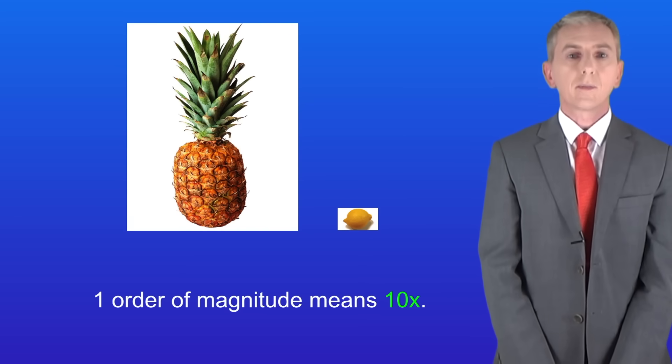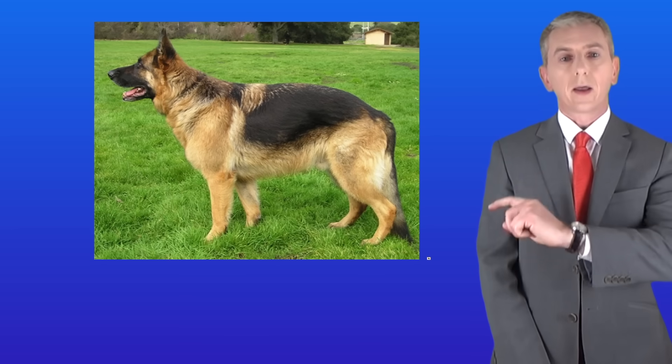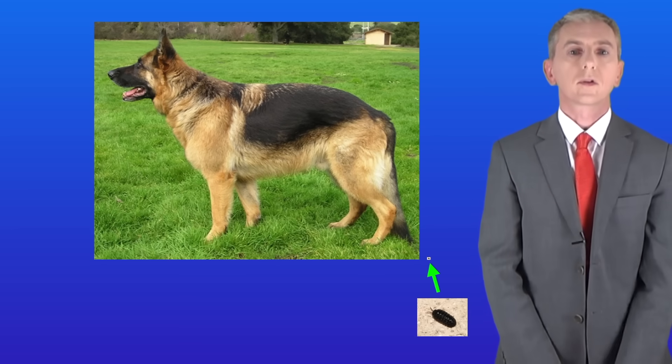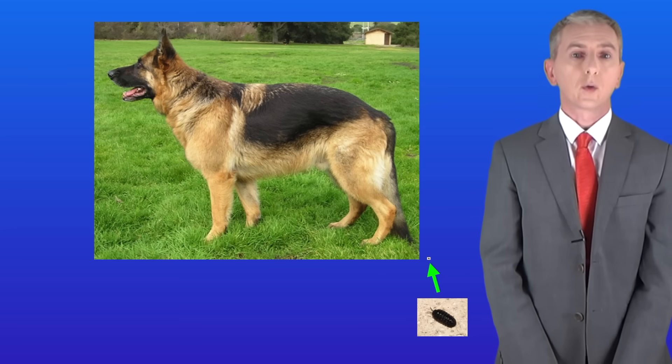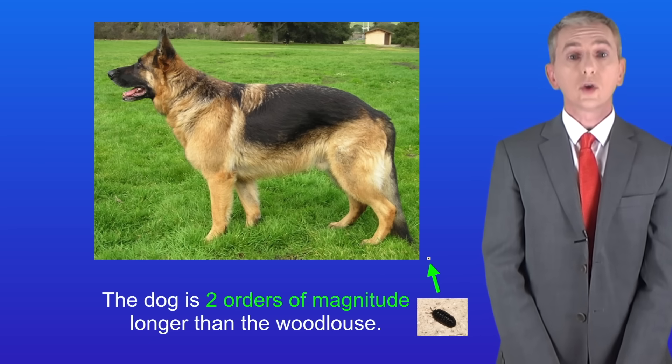So one order of magnitude means 10 times. Here's a dog and down here is a woodlouse. Now a dog is around 100 times longer than a woodlouse. So we would say that the dog is two orders of magnitude longer than the woodlouse.